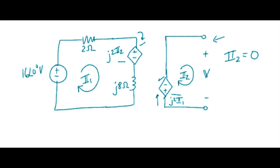The only thing remaining then is this dependent source, so if we note the polarity mismatch, we can write down that V is minus J2 times I1.